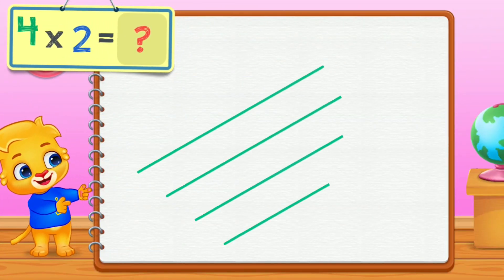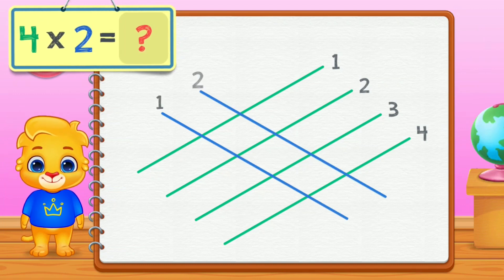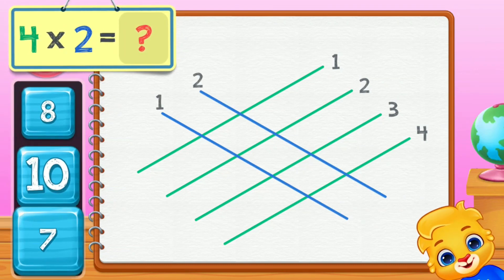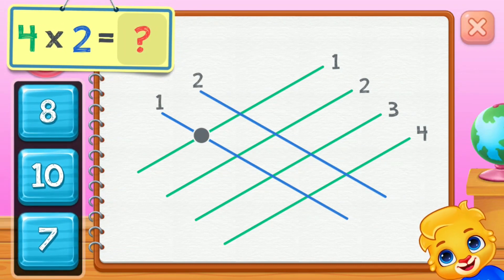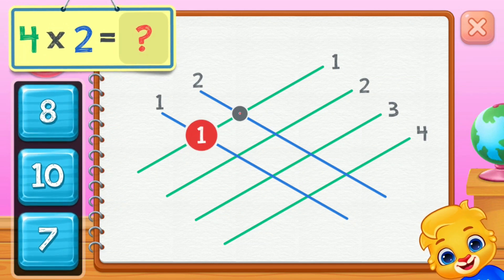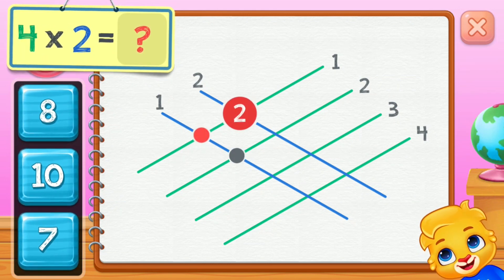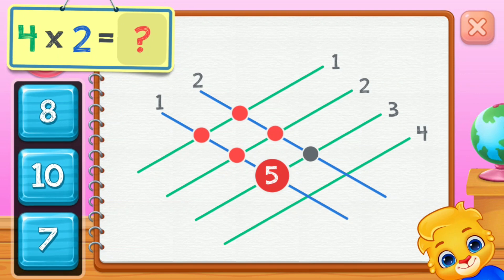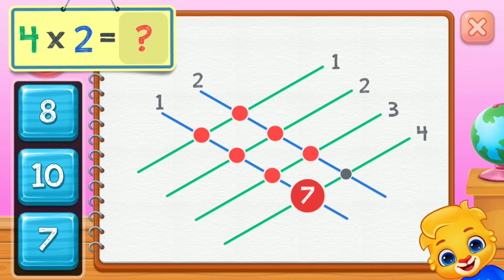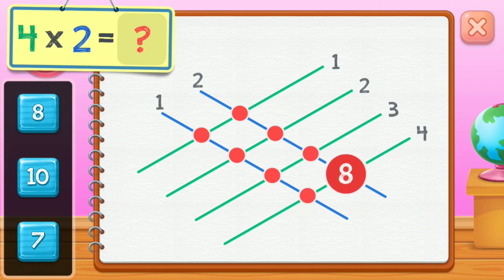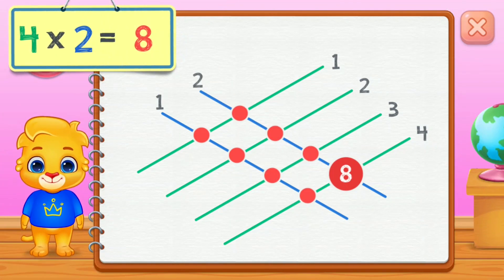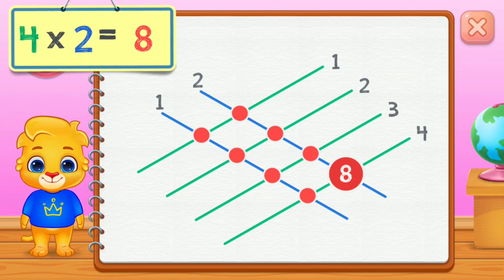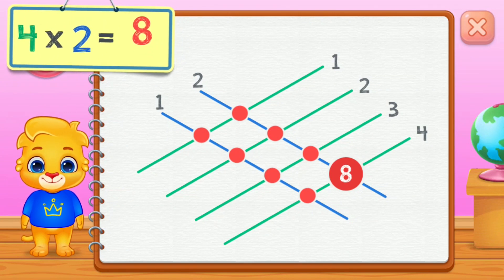Four times two equals... One, two, three, four, five, six, seven, eight. Four times two equals eight.